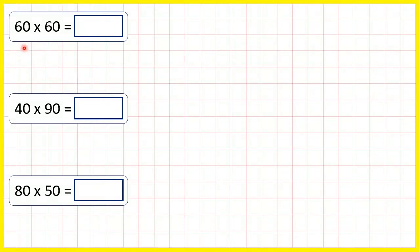Now for these questions, we're multiplying two multiples of 10, so two numbers that end in a zero. So we don't need to use column method to solve these.